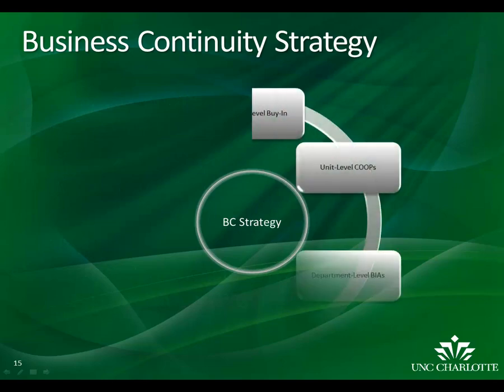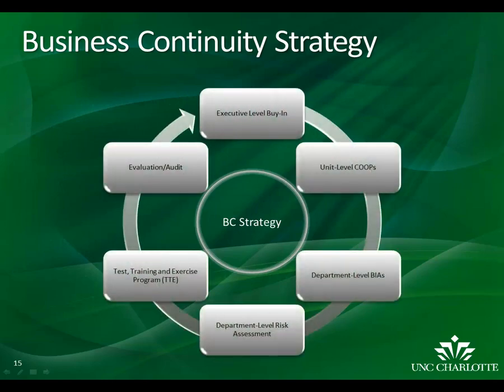The business continuity strategy begins with executive-level buy-in and moves to unit-level Continuity of Operations Plans. Once all the COOPs are finished, the data is then aggregated into a department-level BIA. Subsequently, a department-level risk assessment is done. We then test the plan to validate it and evaluate the plan to find the strengths and improvement areas. Doing all of this helps create a disaster-resilient university.